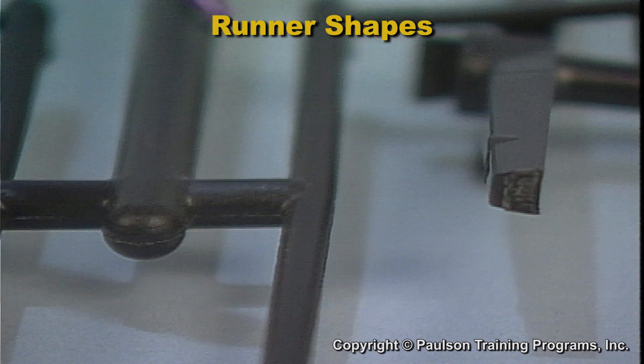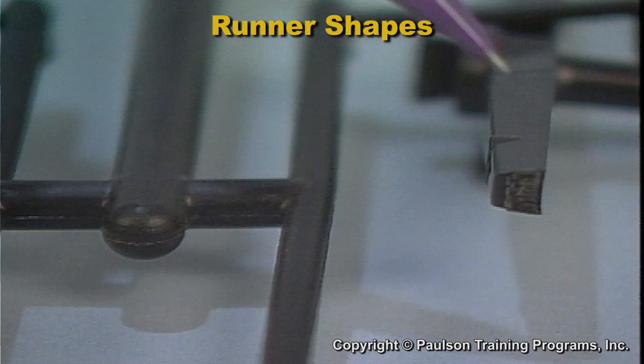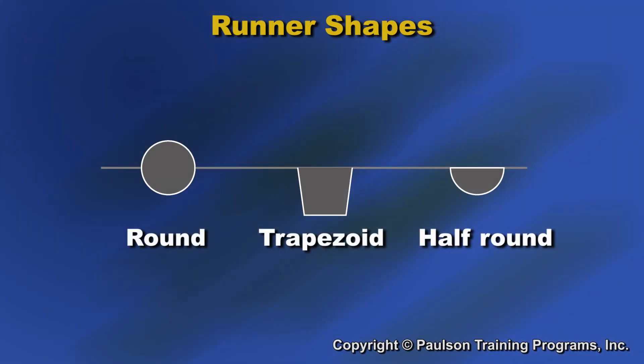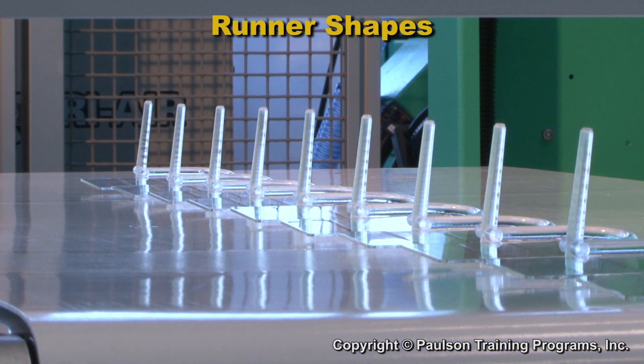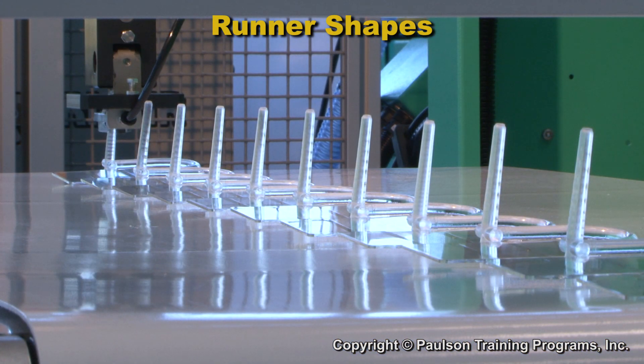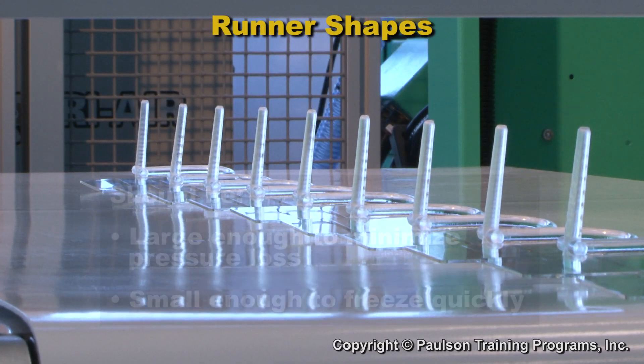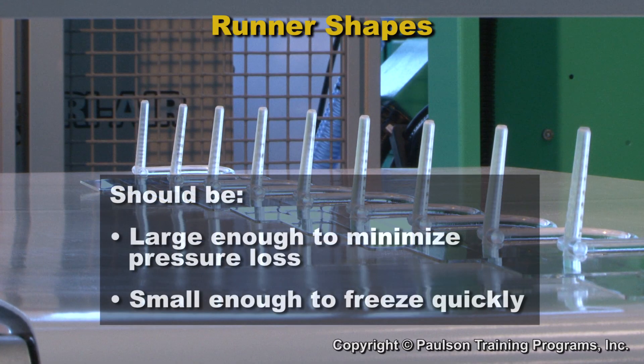The common runner shapes are round and trapezoid. Sometimes half round runners are used. Runners are often oversized. The size of the runner should be large enough to allow plastic flow without a large pressure loss, but small enough to be frozen when the molded part has cooled.